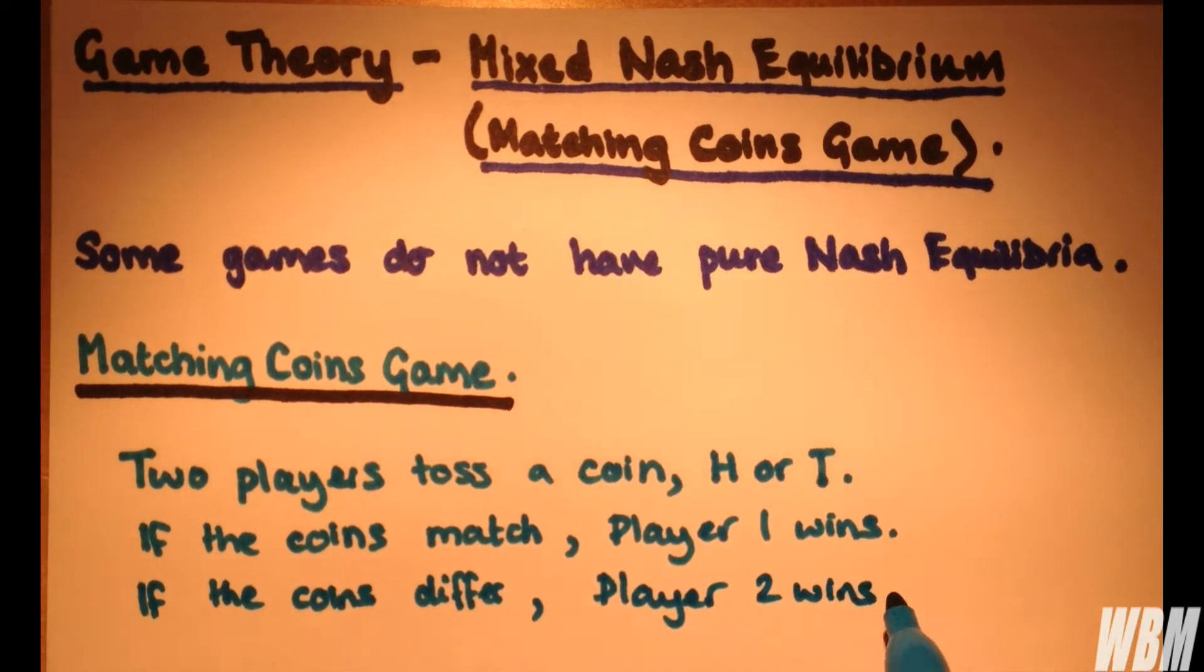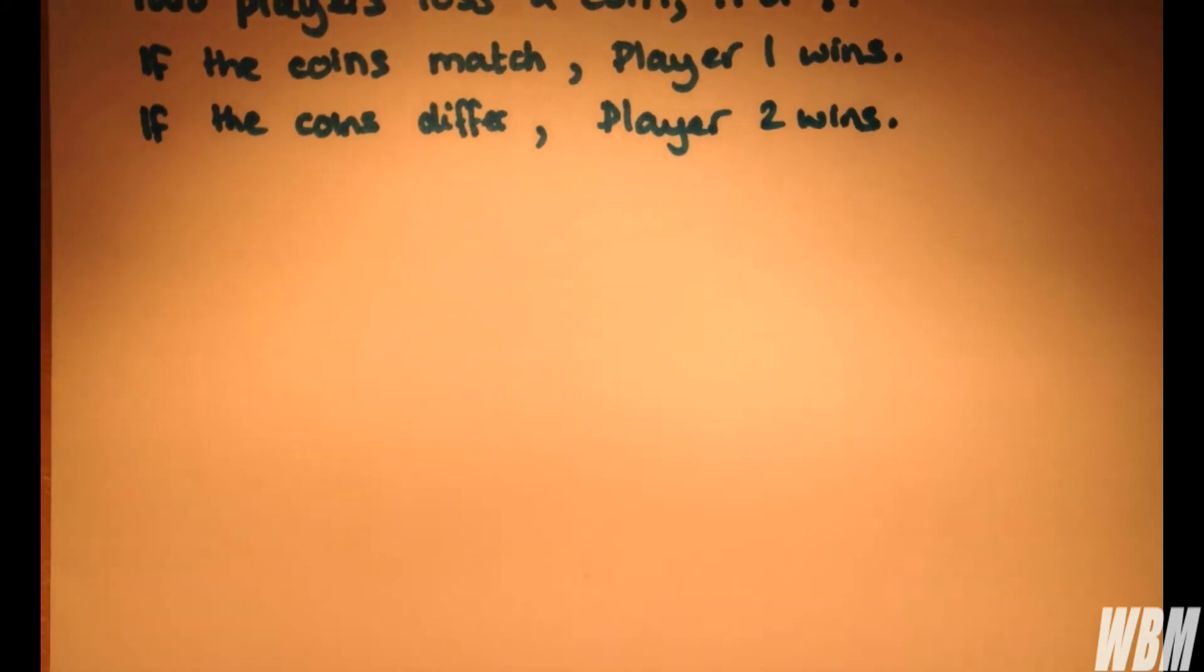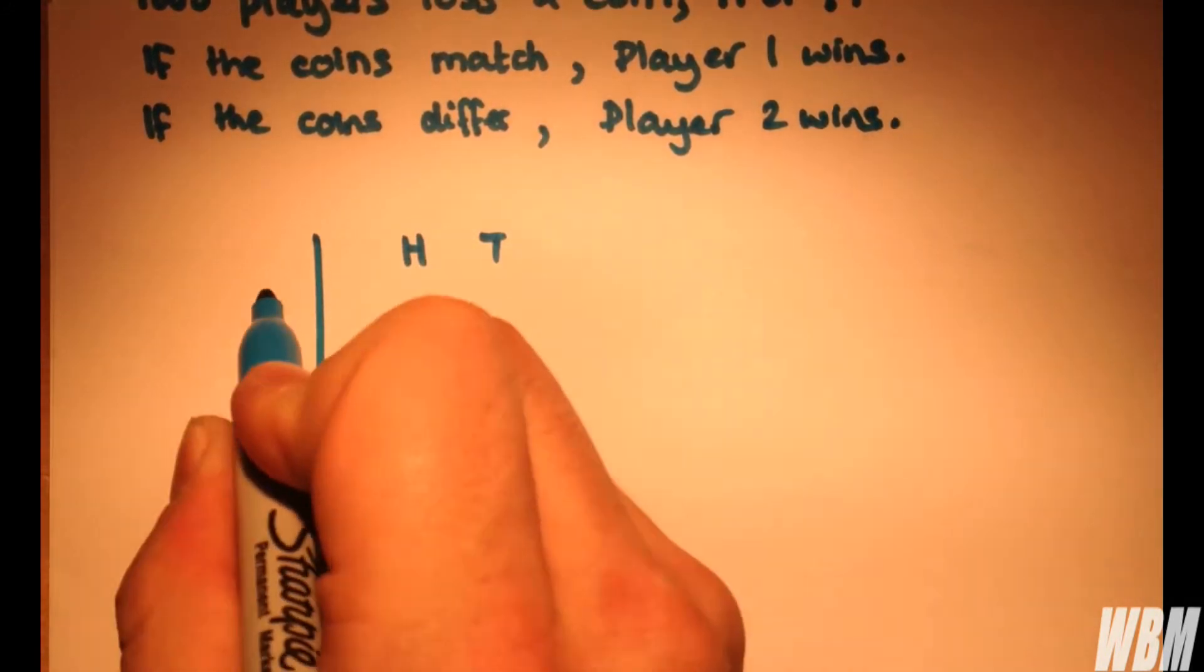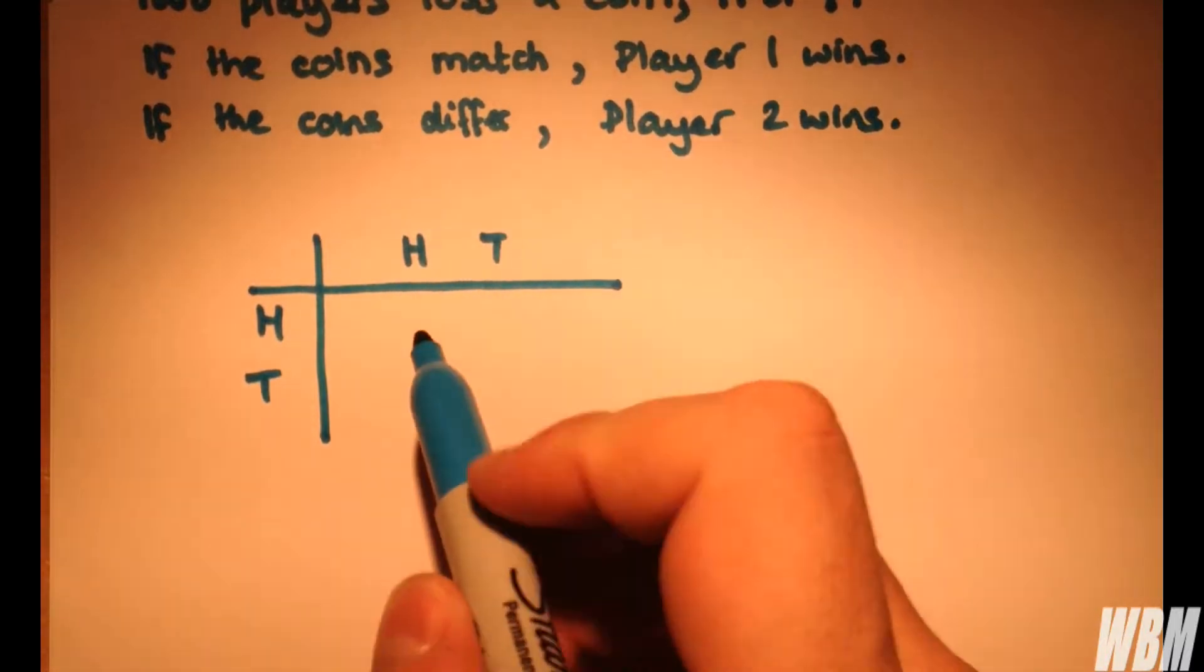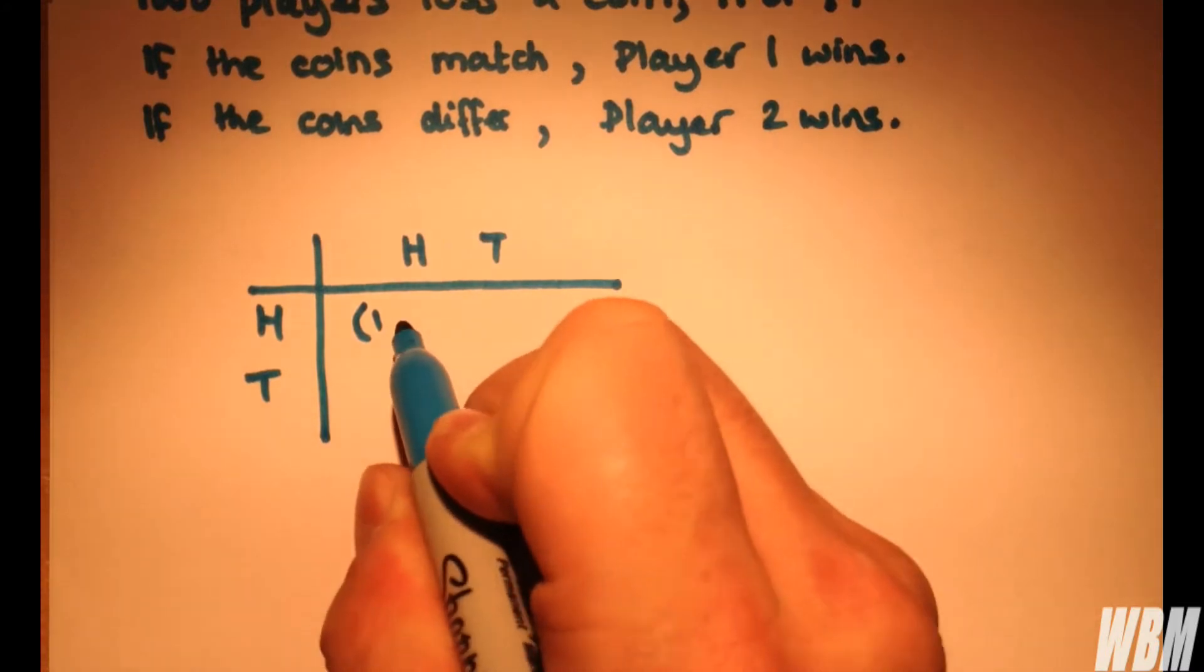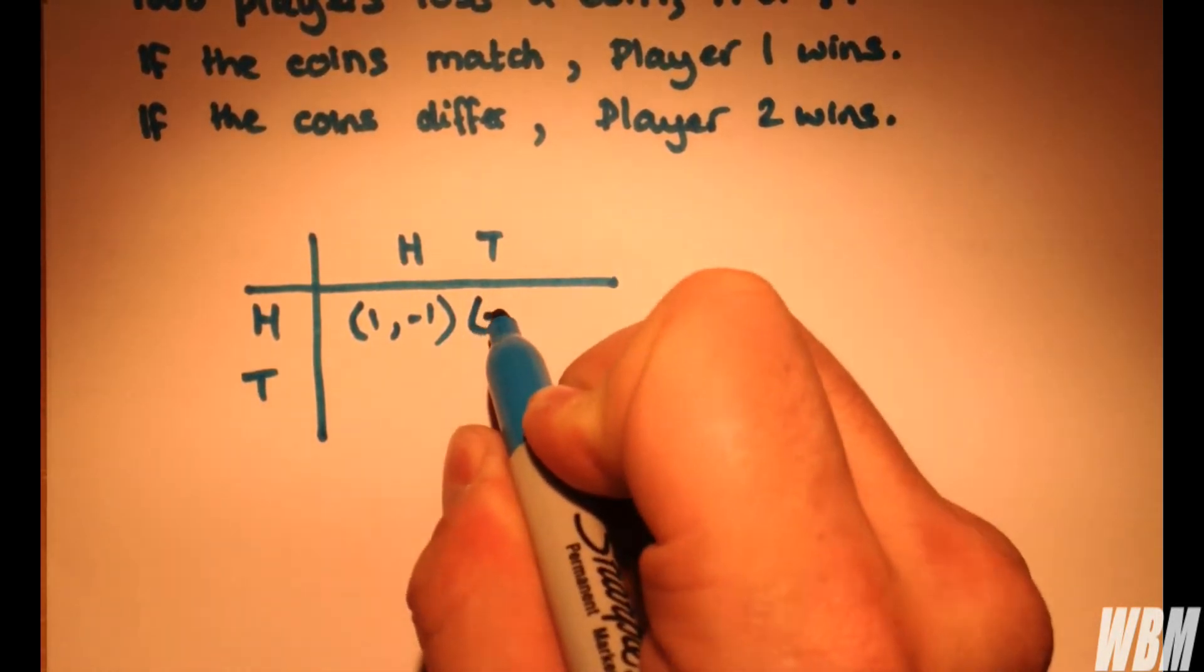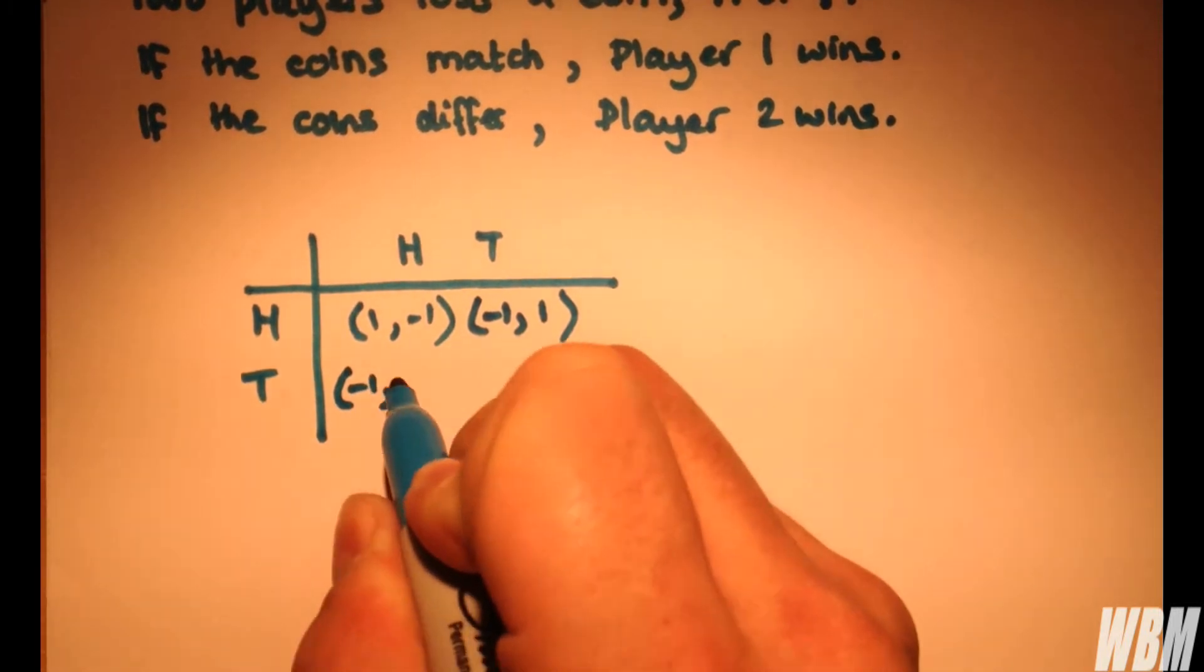So how do we draw this as a game form? Well, quite simply, we have player two up here and player one down here. If the coins match, player one wins, so we'll give him utility one. And of course, if they match, player two loses, so we give him minus one, and we fill in the table. If they're different, player one loses, player two wins.